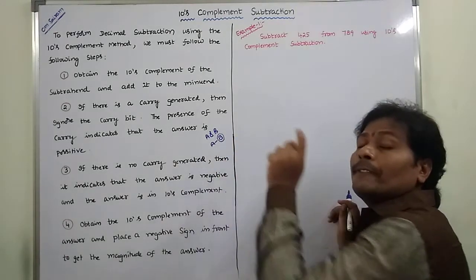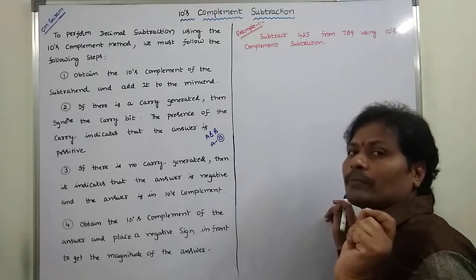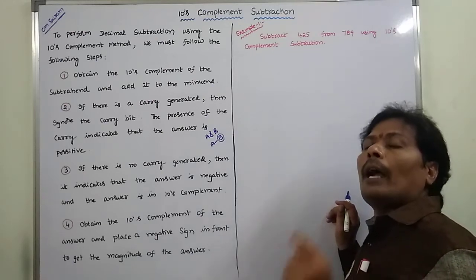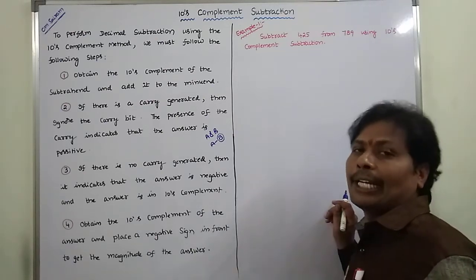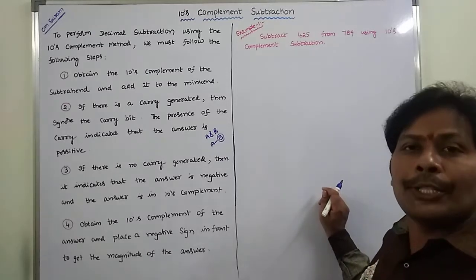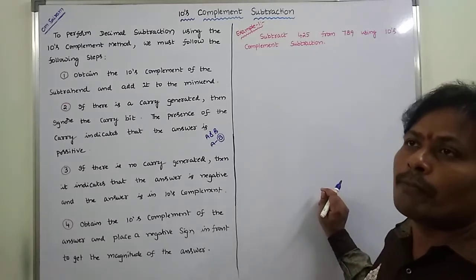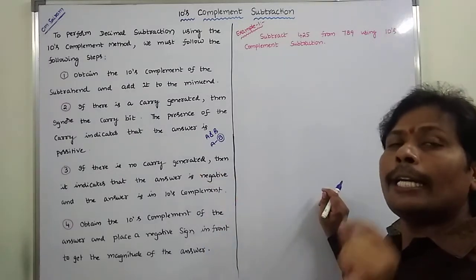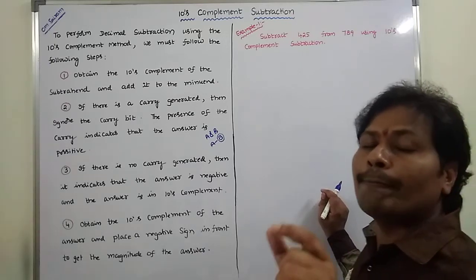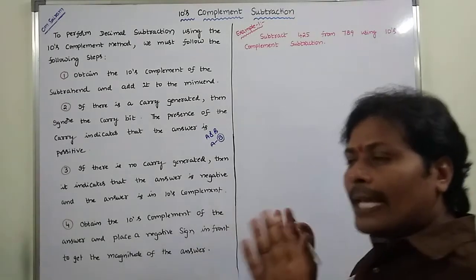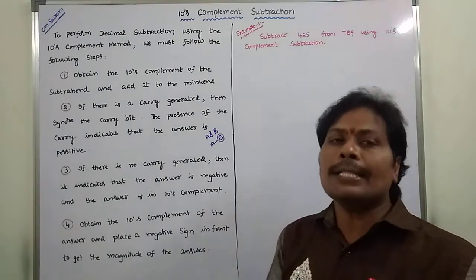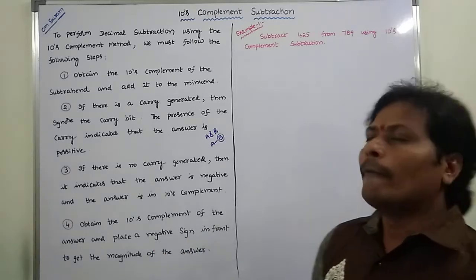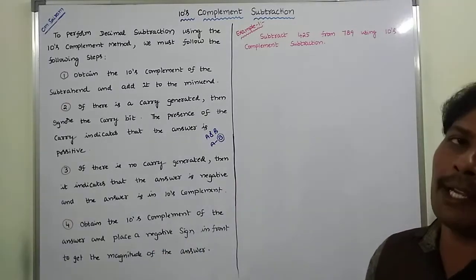Suppose if there is no carry generated, the result is in tense complement form and also the result is negative. To get the magnitude of the result, we have to perform the tense complement on the result again and put a negative sign in front of the result. This step is done if there is no carry generated. These are the steps we have to follow for performing the tense complement subtraction.